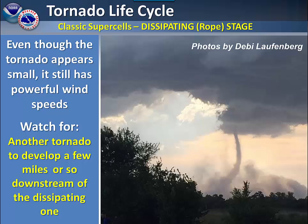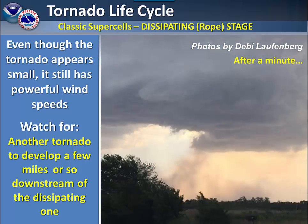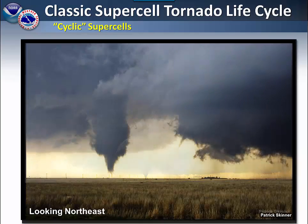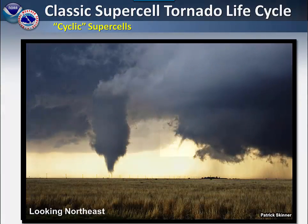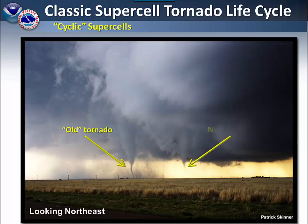Here is an example of what we call a cyclic supercell. The main tornado is visible in the middle of the screen. Zooming in a couple of minutes later, there is a funnel cloud forming to the right of the main tornado. We then see the development of the new tornado as the old one starts to weaken.